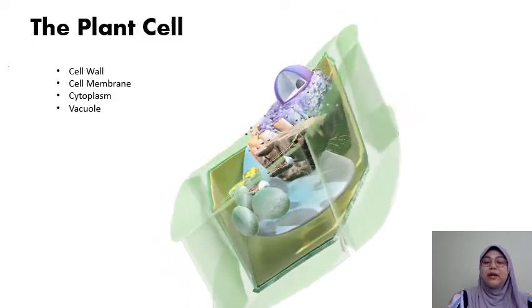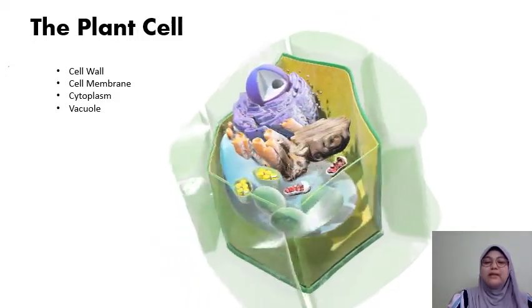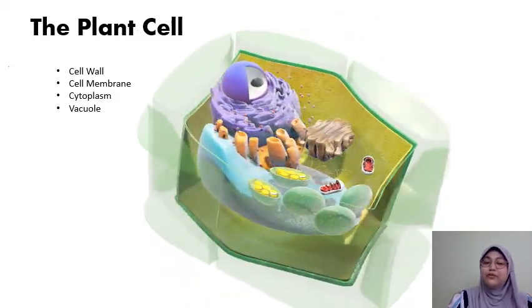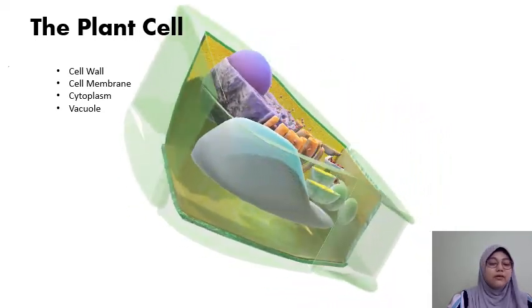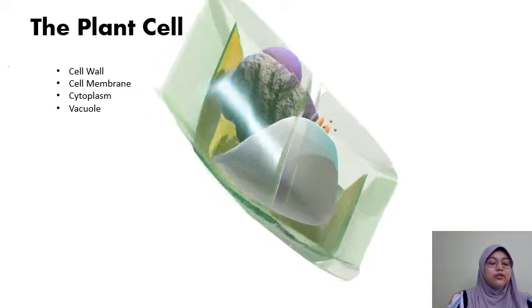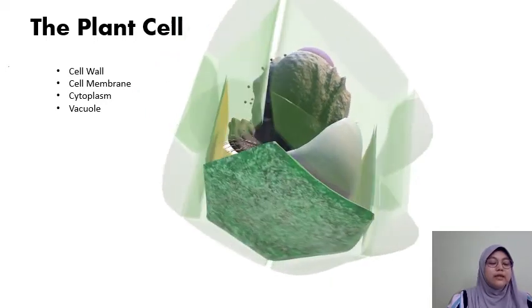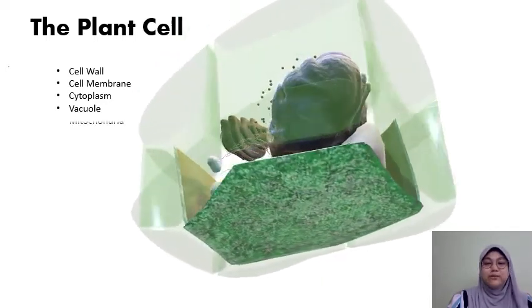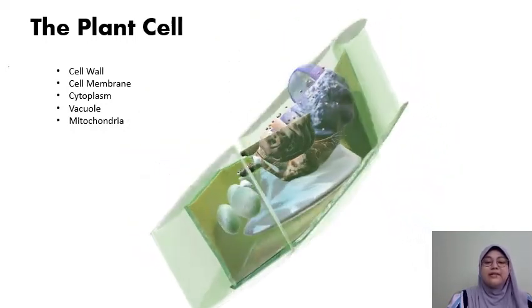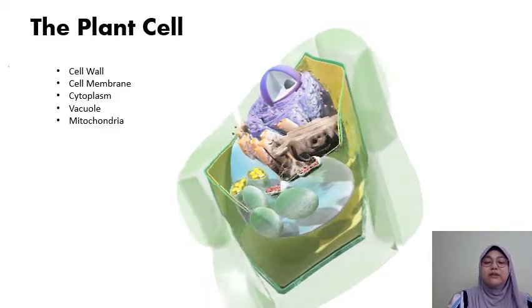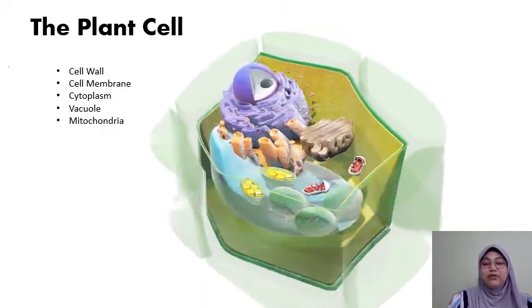Next we have the vacuole, which is an organelle. It's an organelle that stores food, proteins, and various chemicals, sugars, minerals, so basically a storage. Next up we have the mitochondria, which is the site for conversion of nutrients into energy.